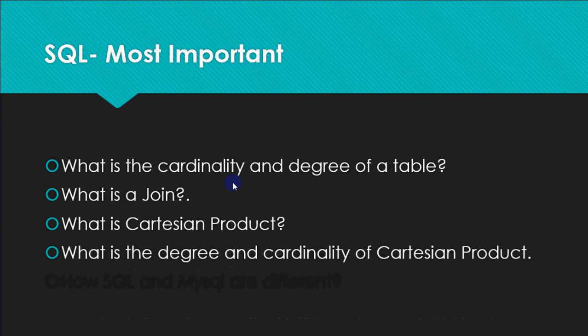It can also be asked like what is the degree and cardinality of cartesian product. This question comes a number of times in theory exam as well. When we have to find cardinality of cartesian product it's number of rows in the first table multiplied by number of rows in the second table. Like we had taken this example where we have A, B and 1, 2, 3.